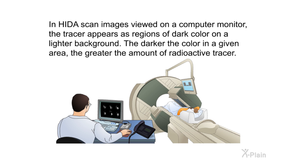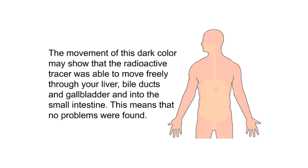Test results. In HIDA scan images viewed on a computer monitor, the tracer appears as regions of dark color on a lighter background. The darker the color in a given area, the greater the amount of radioactive tracer. The movement of this dark color may show that the radioactive tracer was able to move freely through your liver, bile ducts, and gallbladder and into the small intestine, meaning no problems were found.